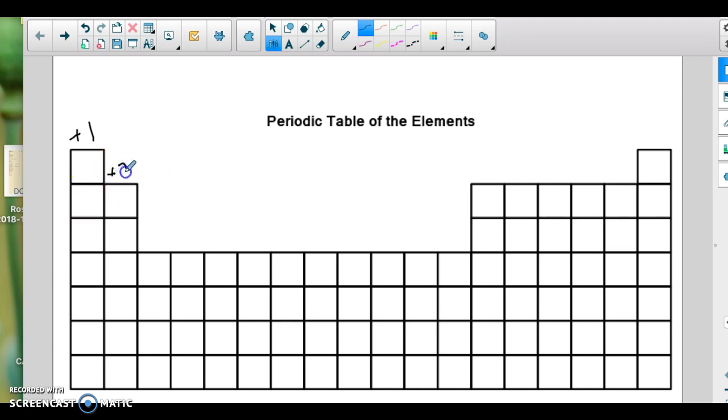This group is going to be plus 2. We skip the transition metals because they don't just all have a certain charge in a certain group. But then we get over here, and if it's going to form an ion in this group, it's plus 3. This group here we're going to skip because it can do a lot of different things.